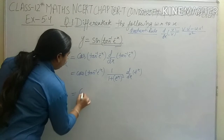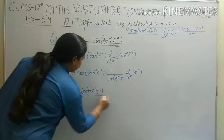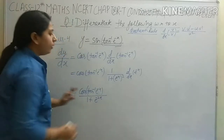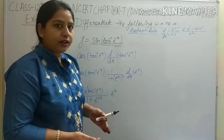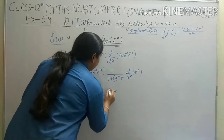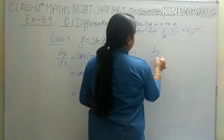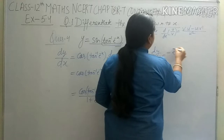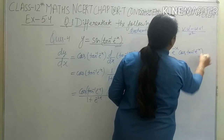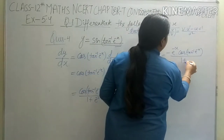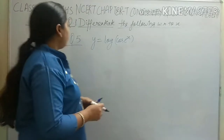We get cos(tan inverse e^(−x)) times 1/(1 + e^(−2x)). Differentiation of e^(−x): since the power is minus x, it gives a negative sign, so e^(−x). Therefore dy/dx equals minus e^(−x) times cos(tan inverse e^(−x)) upon (1 + e^(−2x)).